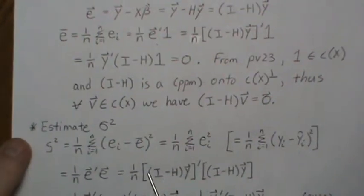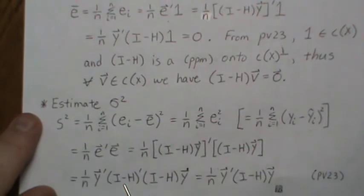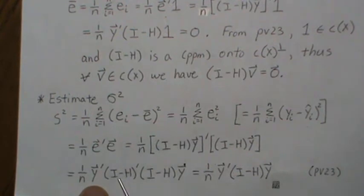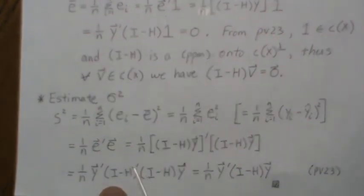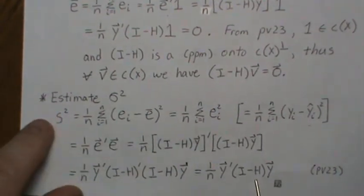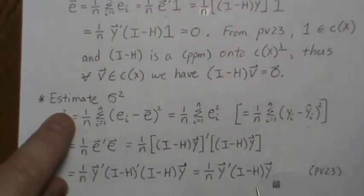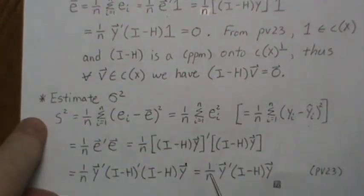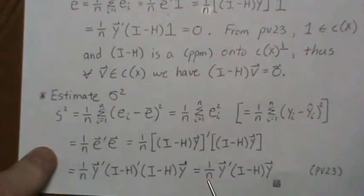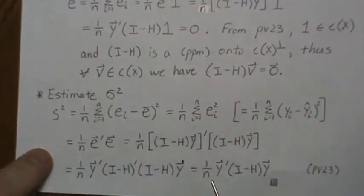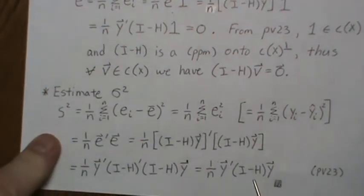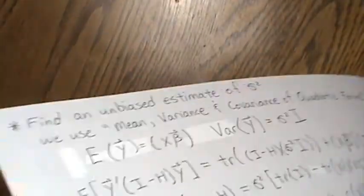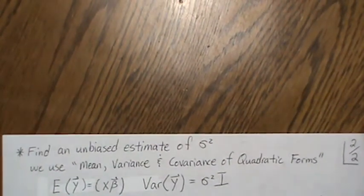The sum of E_i squared can be written as the dot product Eᵀ·E. Each E is (I − H)Y, and putting in the transpose we get Yᵀ(I − H)ᵀ(I − H)Y. Since (I − H) is symmetric and idempotent, this simplifies to Yᵀ(I − H)Y — that's our estimate of σ² in matrix notation. It's the MLE, but it is biased.